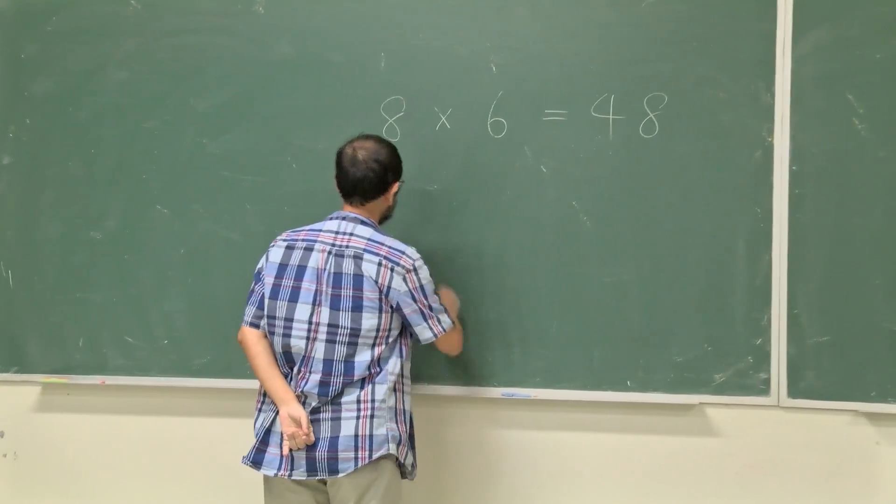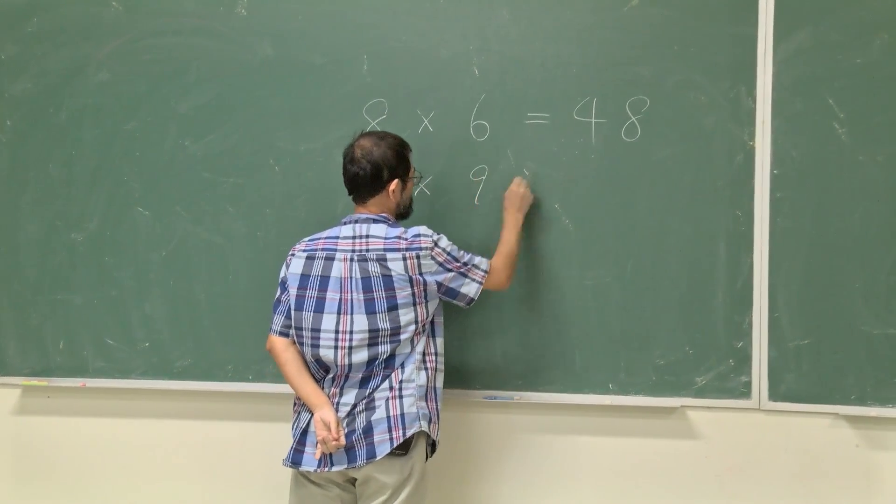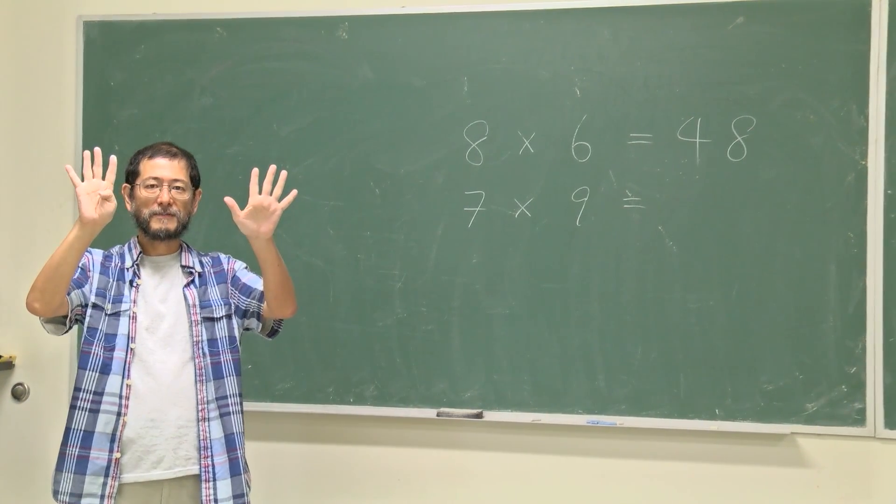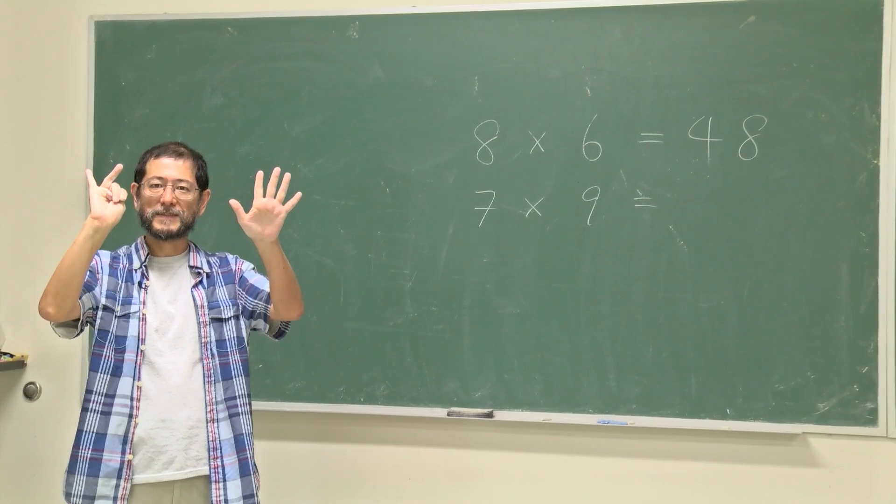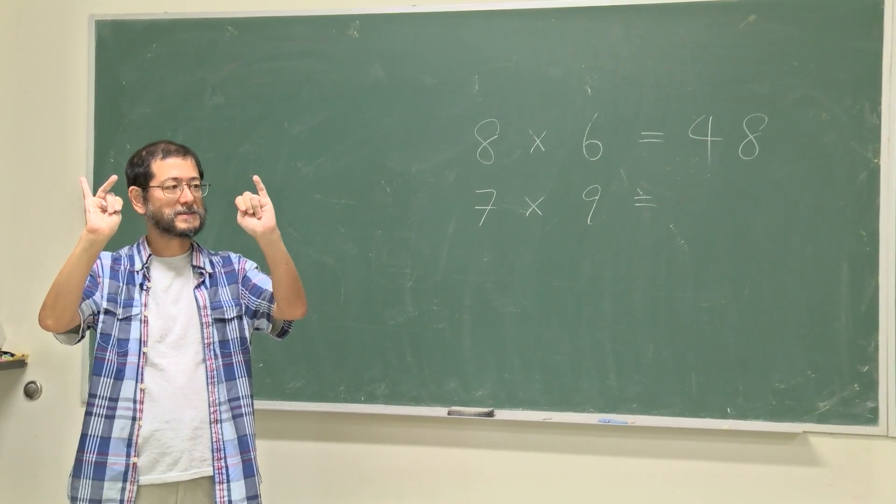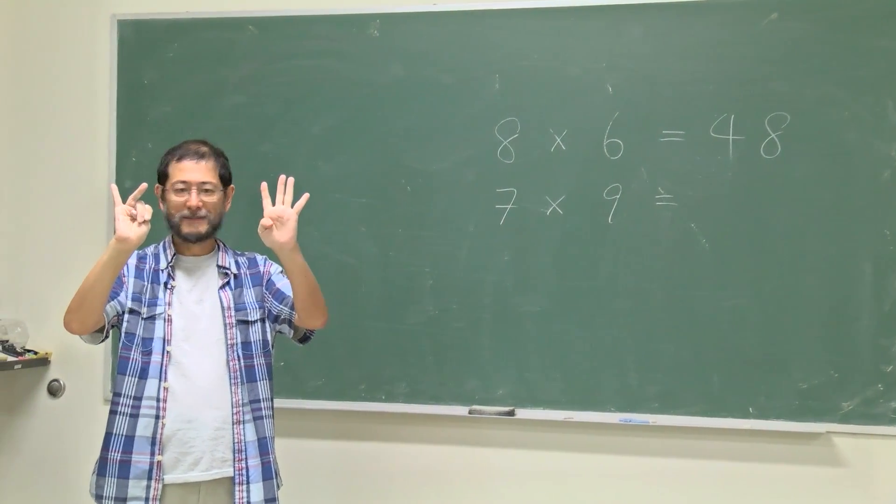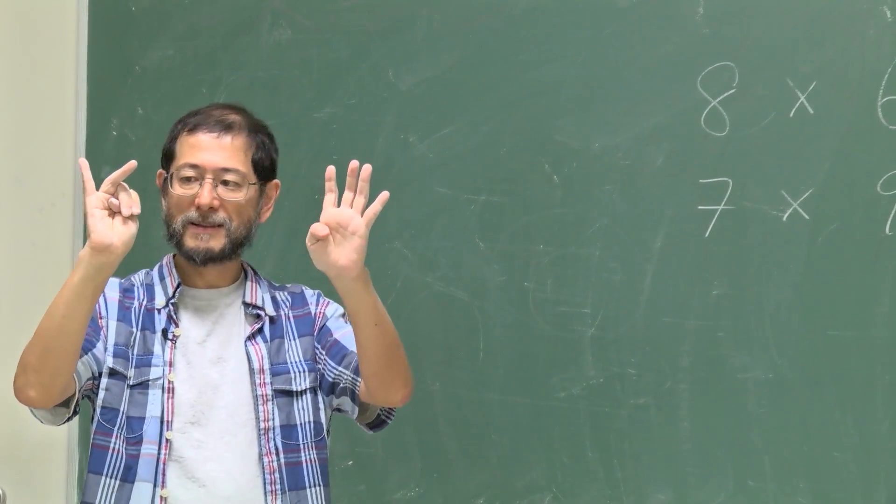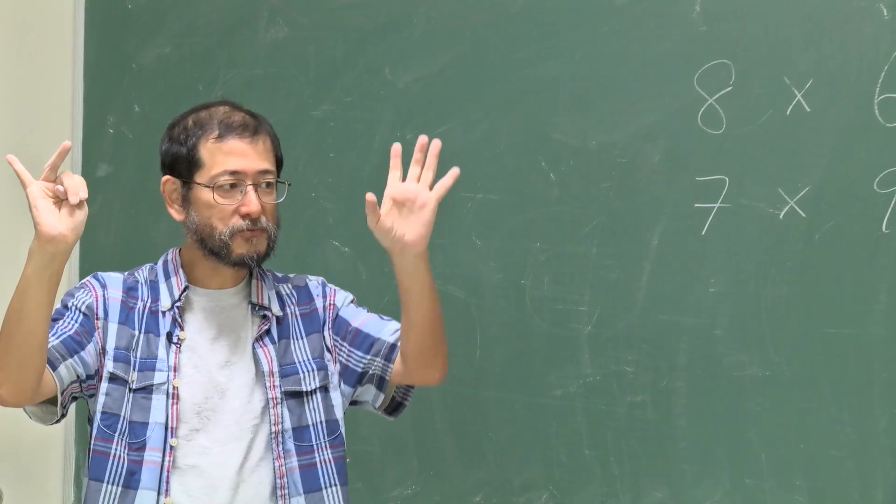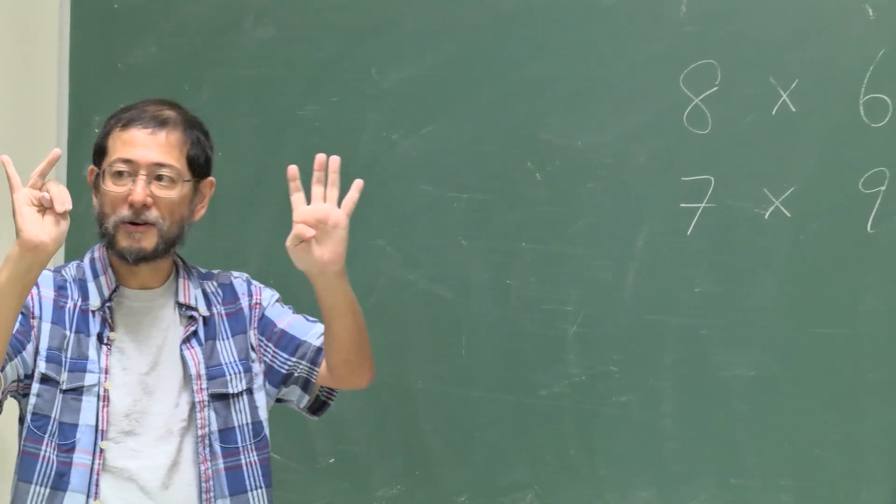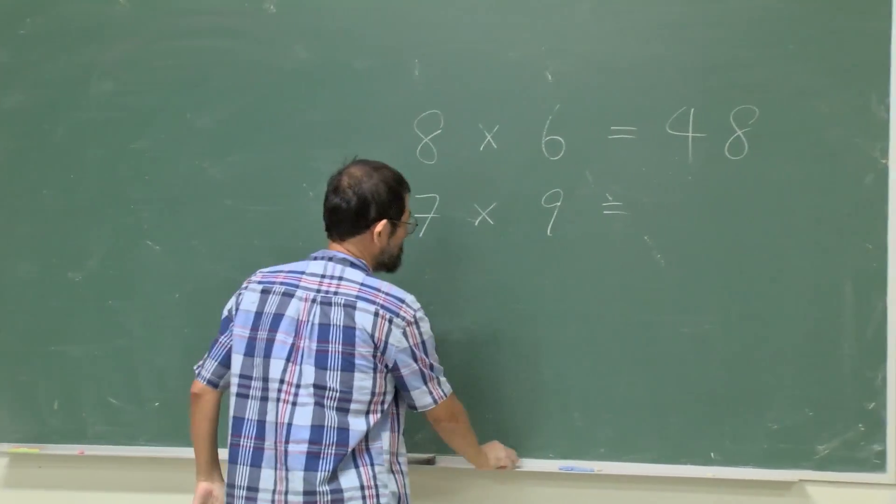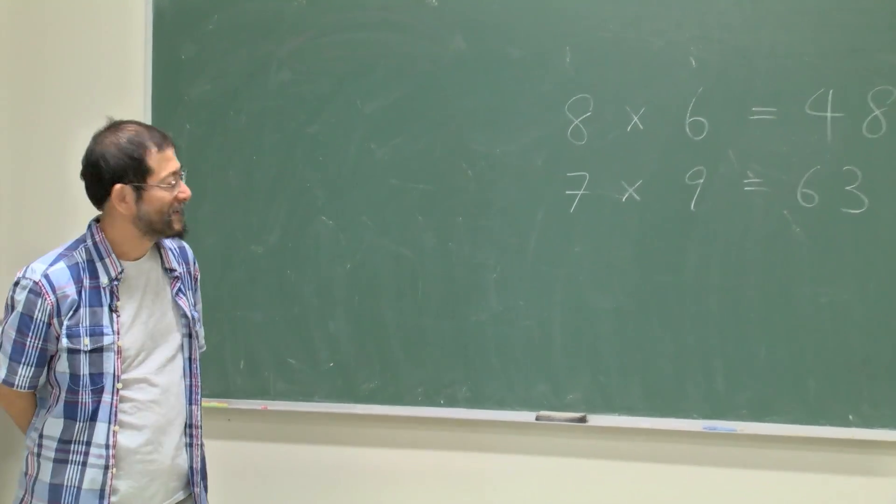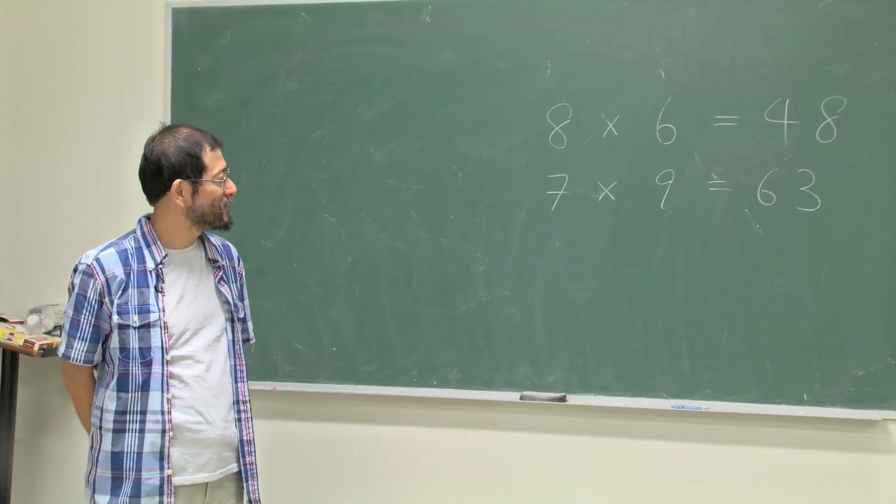How about that one? Let's try 1, 2, 3, 4, 5, 6, 7 times 1, 2, 3, 4, 5, 6, 7, 8, 9. How many fingers are standing together? Six. And then the rest, 3 times 1, which is 3. So it's 63.